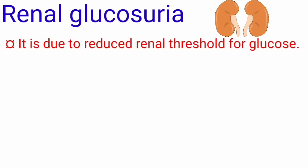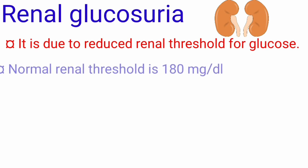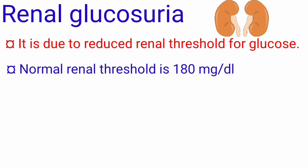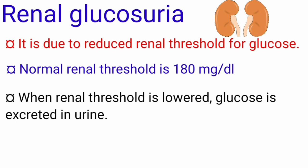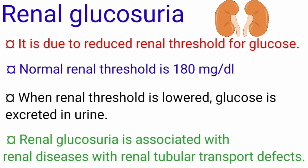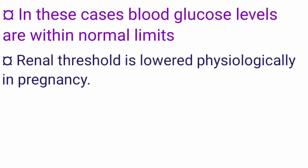Renal Glucosuria is a benign condition due to a reduced renal threshold for glucose. The normal renal threshold for glucose is 180 milligrams per deciliter, and when this threshold is lowered, glucose is excreted in urine. This condition is also associated with renal diseases with renal tubular transport defects, for example Fanconi's syndrome, where Glucosuria is seen along with Amino Aciduria and Phosphaturia. In these cases, blood glucose levels are within normal limits. The renal threshold is also lowered in physiological conditions like pregnancy — about 10% of pregnant women show renal Glucosuria in the last trimester.